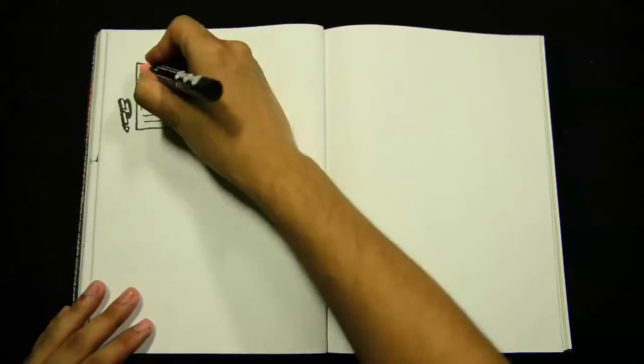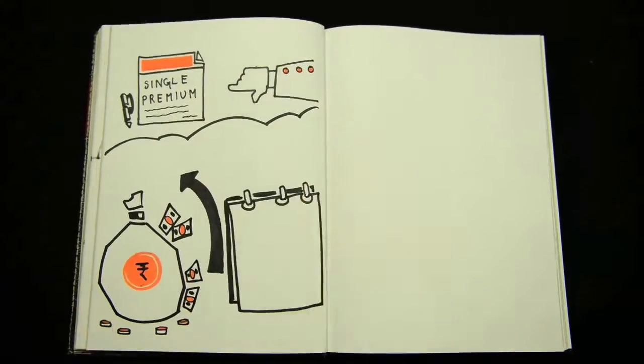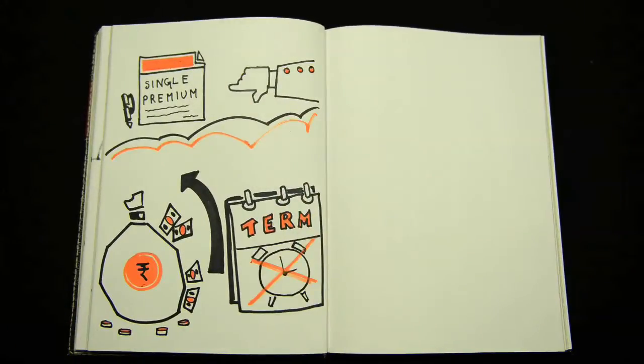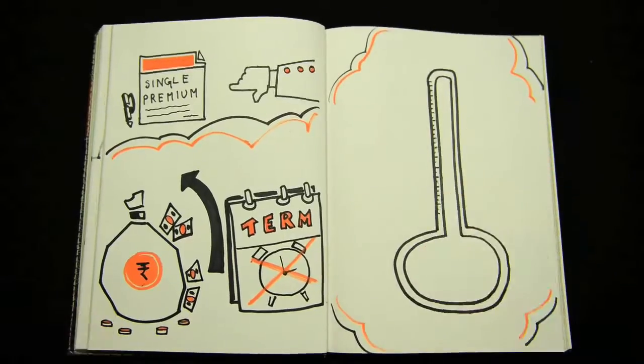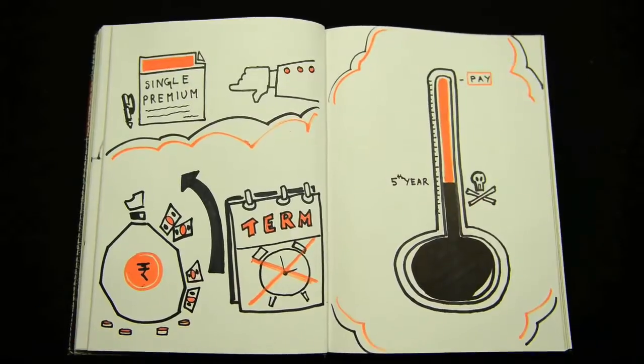But a serious flaw with a single premium policy is that you pay up front for a term that you may not need. For example, a policyholder may die in the fifth year of a policy, but she would have already paid for a 20-year policy.